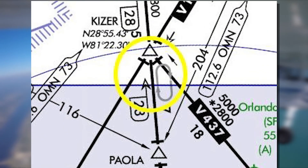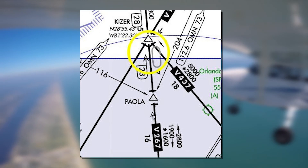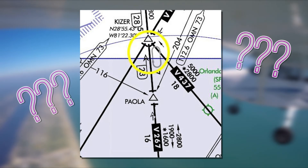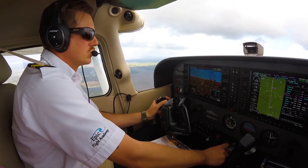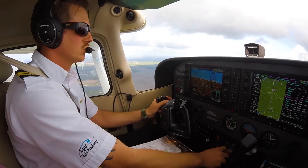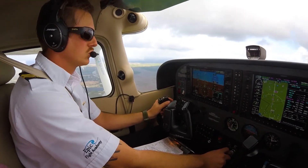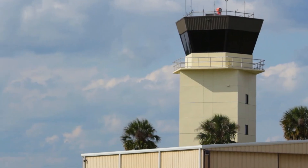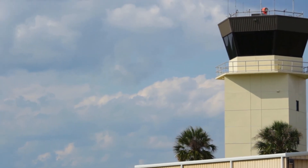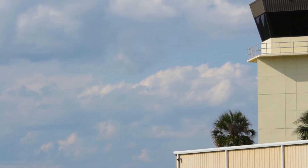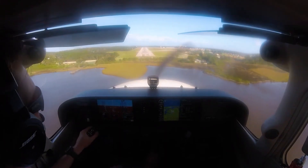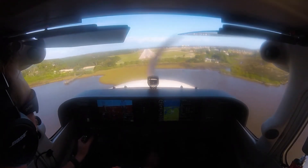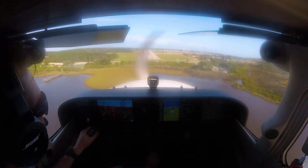Unpublished holds are holds assigned by air traffic control at a given fix not found on an en route chart or instrument approach procedure. These holds are often requested by the pilot for practice but can also be assigned by air traffic control to alleviate traffic congestion or sequencing issues along airways or when approaching an airport.